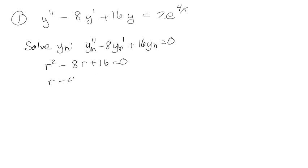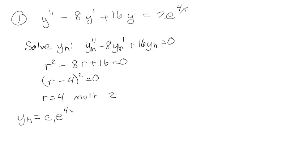We've got r minus 4, quantity squared, equals 0, which means r equals 4 with multiplicity 2. So my homogeneous solution is c₁e^(4x) plus c₂xe^(4x), which is all well and good.